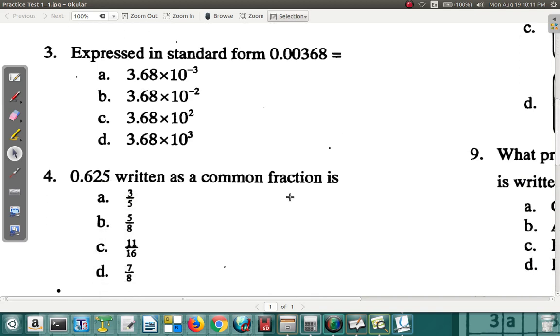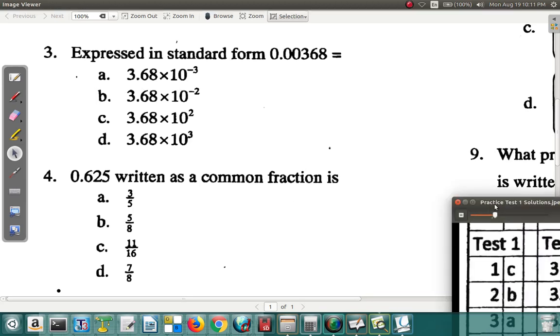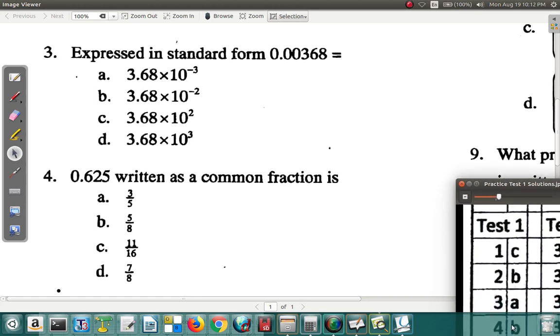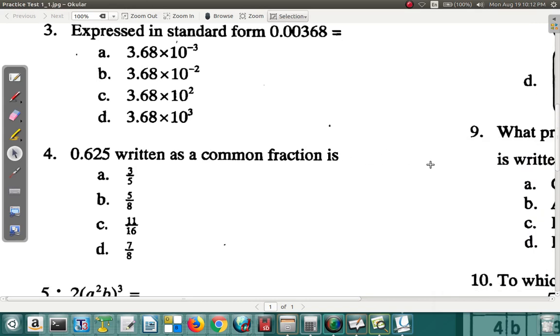Question four: 0.625 written as a common fraction is... What do you think? The answer is b, four is b. Let's see why. Now you have 0.625. You're converting a decimal to a fraction. Any number you write is like the number over one, so it's 0.625 divided by one. What number can you multiply both the numerator and denominator by to get rid of this point and get a whole number over a whole number? If you multiply 0.625 by a thousand, you're going to get 625. So you multiply the top by a thousand, you must multiply the bottom by a thousand too, so it's 625 over a thousand.